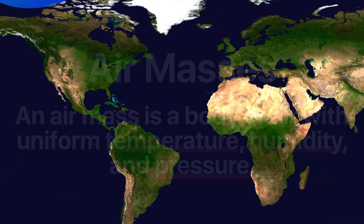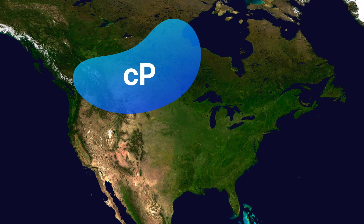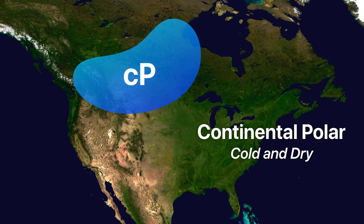Let's take a look at one such air mass. In the United States, we're often affected by large continental polar, or CP, air masses that get pushed down from Canada to the continental United States. These air masses are going to have common characteristics of temperature, pressure, and humidity. Continental polar air masses, as the name implies, tend to be cold and dry.